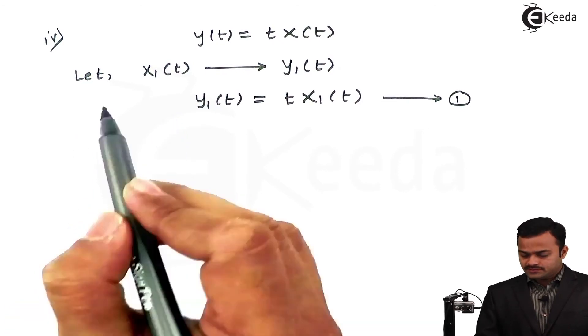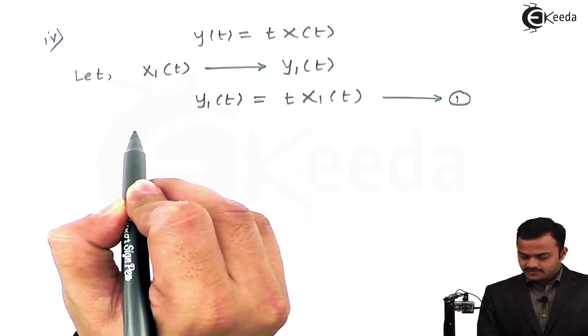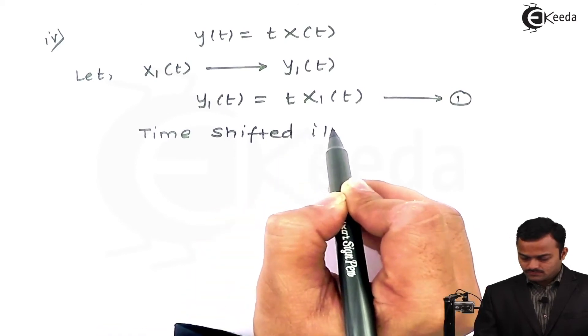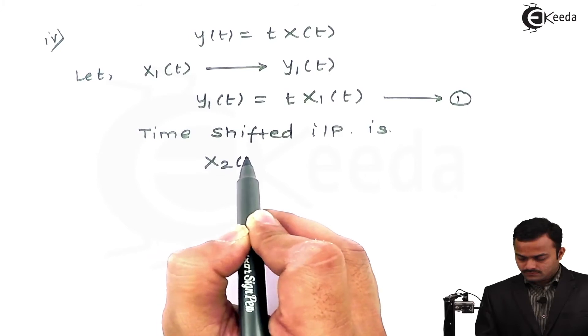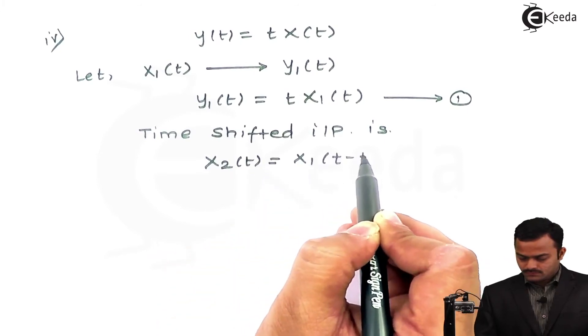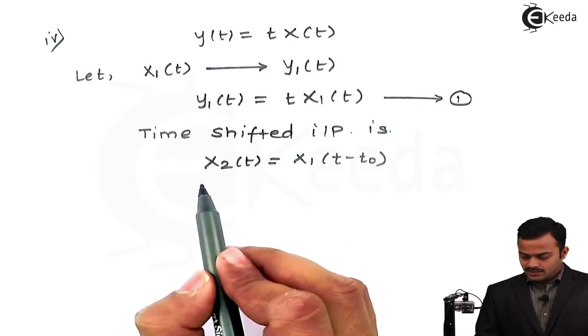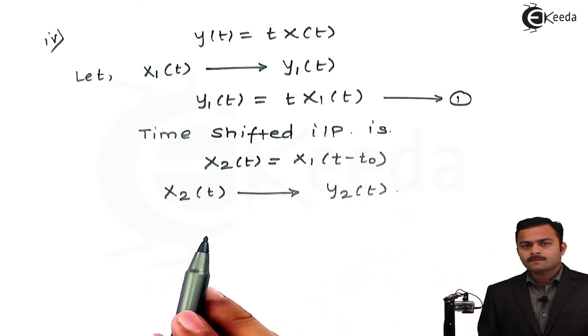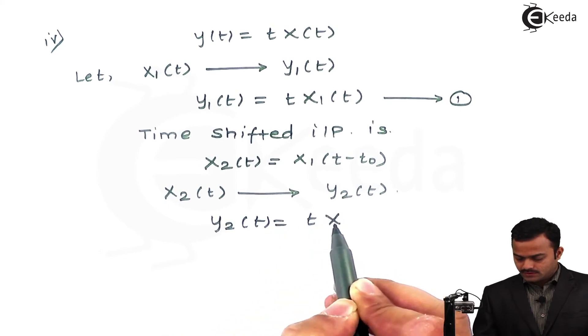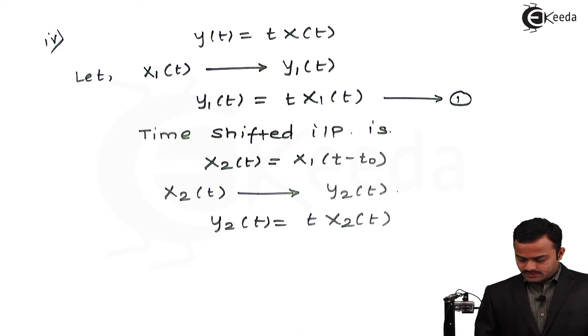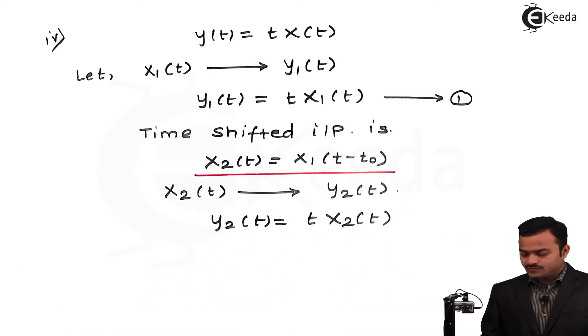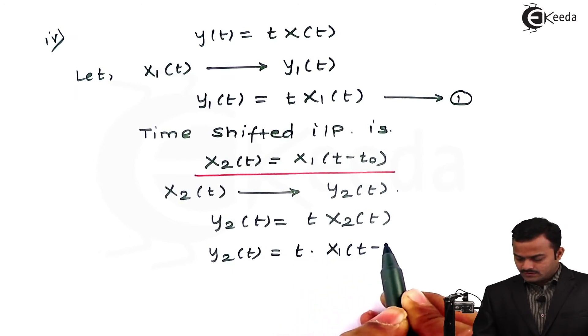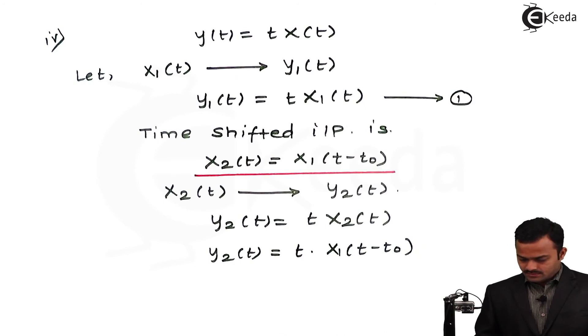Now, let's consider the second input, which is time shifted version of x₁(t). So I delay x(t) by t₀ units and this x₂(t) is now given to a system whose output is y₂(t). And y₂(t) is nothing but t times x₂(t). Now, x₂(t) is x₁(t - t₀). So I will get y₂(t) as t·x₁(t - t₀). This is equation number 2.